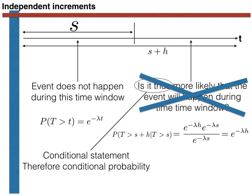This property is an important property of the exponentially distributed random variable. As already mentioned, we say that the exponentially distributed random variable has no memory. Furthermore, the exponentially distributed random variable is the only random variable that has this property. In essence, the random variable's lack of memory ensures that having already waited s seconds for an event to occur has no effect on the amount of time you will subsequently have to wait.